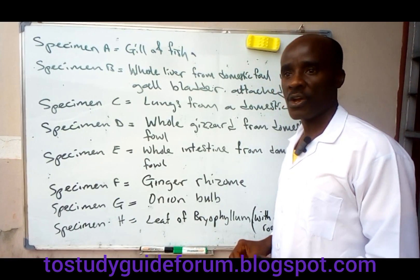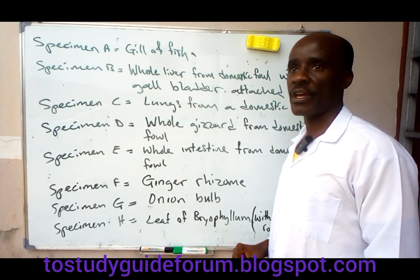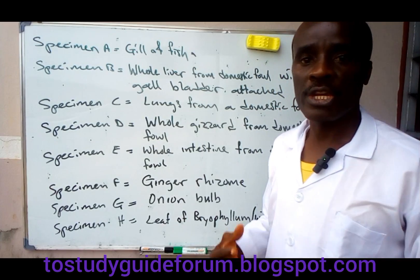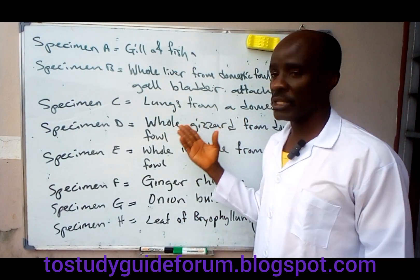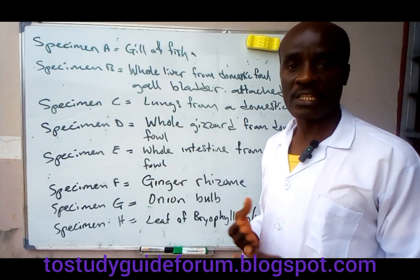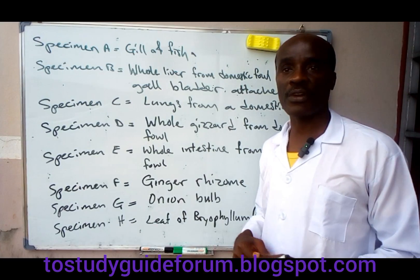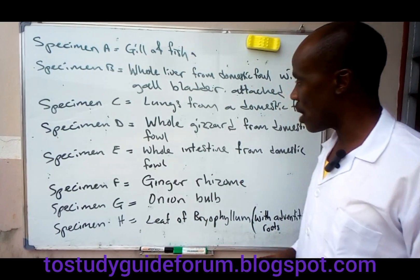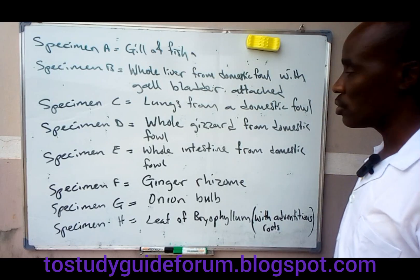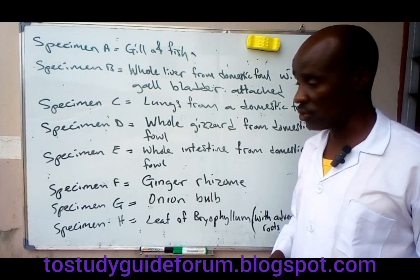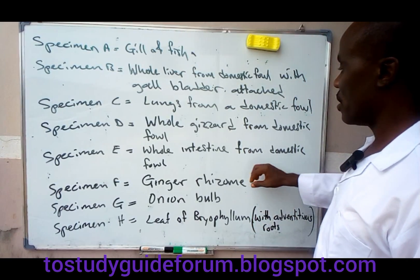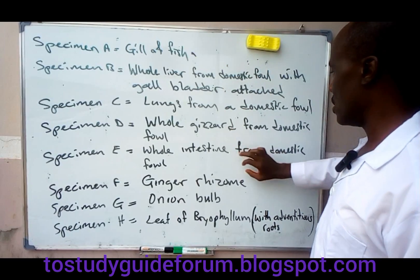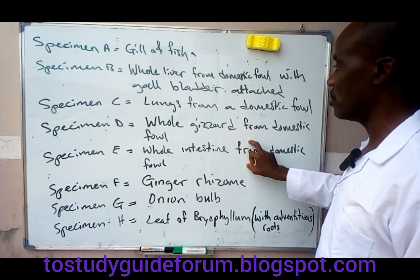The liver plays a very important role in the breakdown of amino acids, and also in the conversion of excess sugar to glycogen, where it will be stored in the body. So the liver and the intestine have something in common from a digestive and metabolic standpoint.